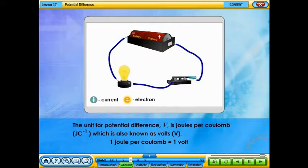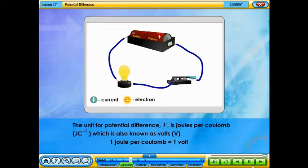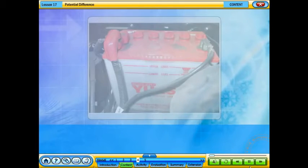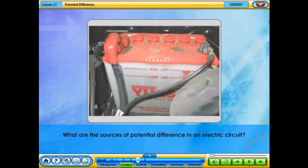The unit for potential difference, which is also known as voltage, is the volt (V). What are the sources of potential difference in an electric circuit?